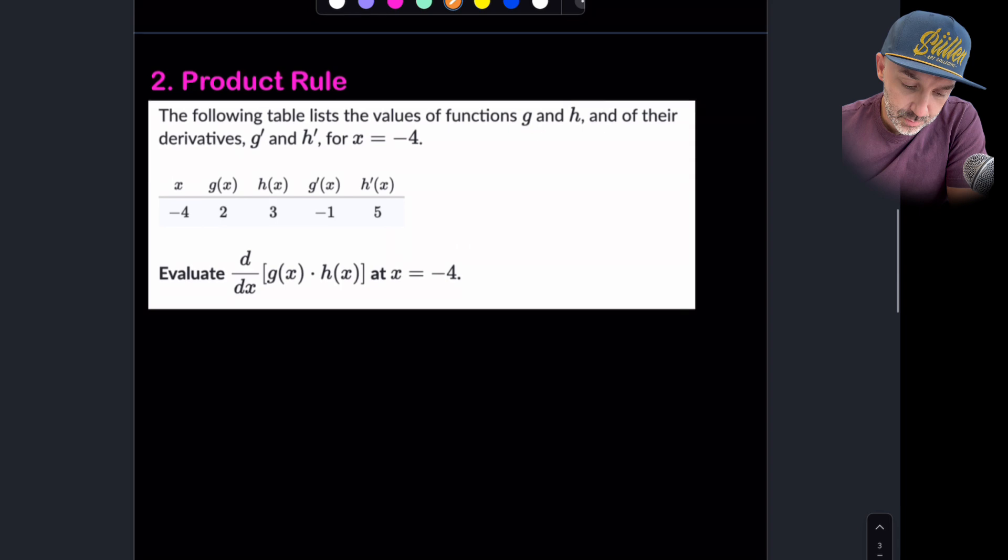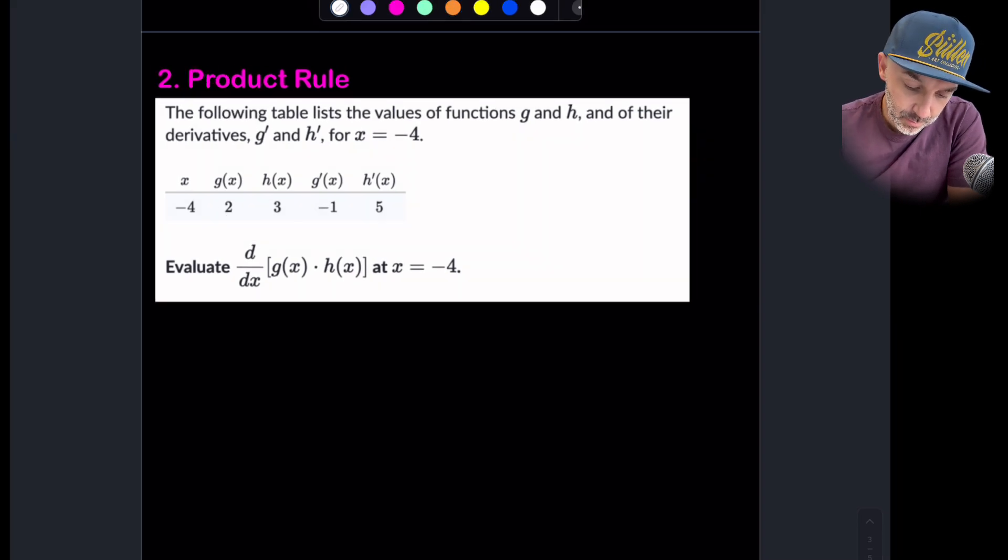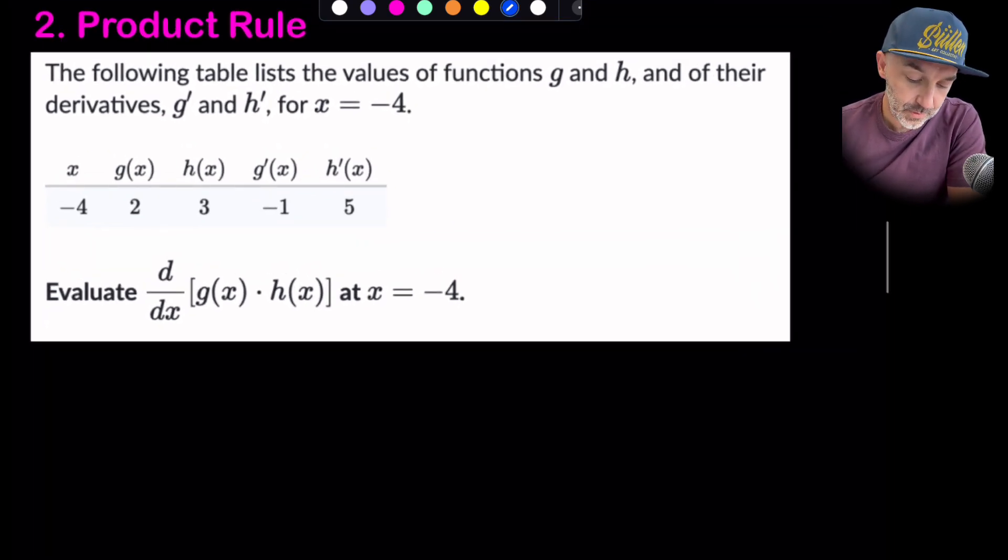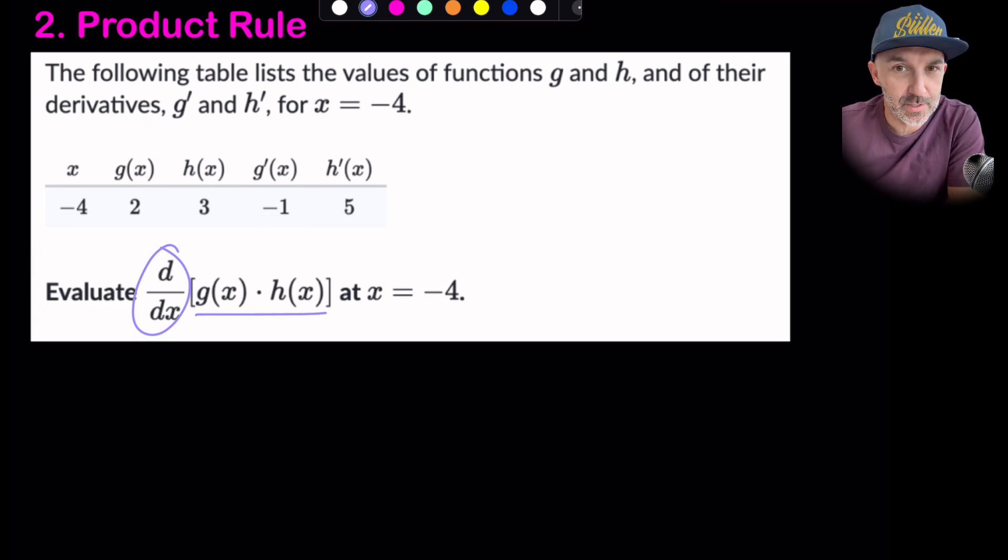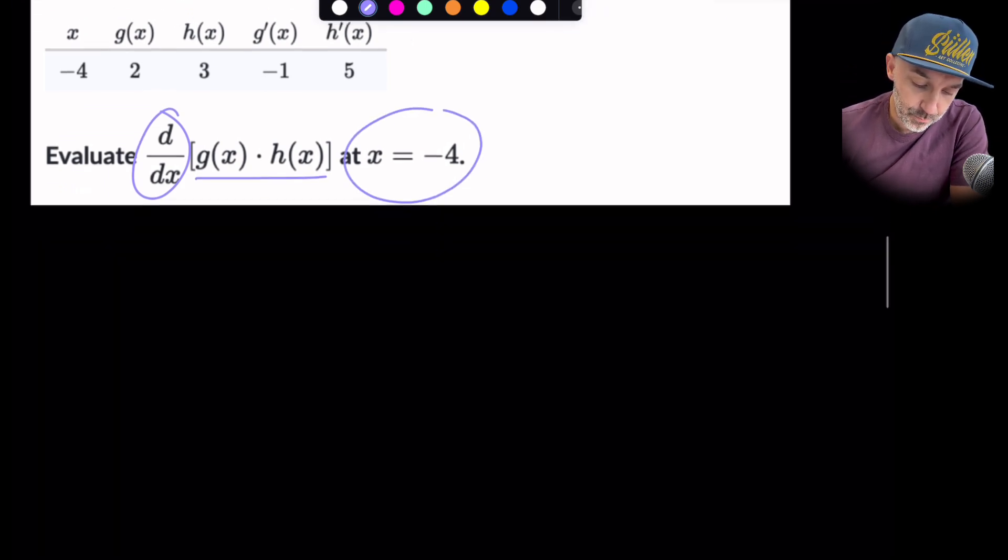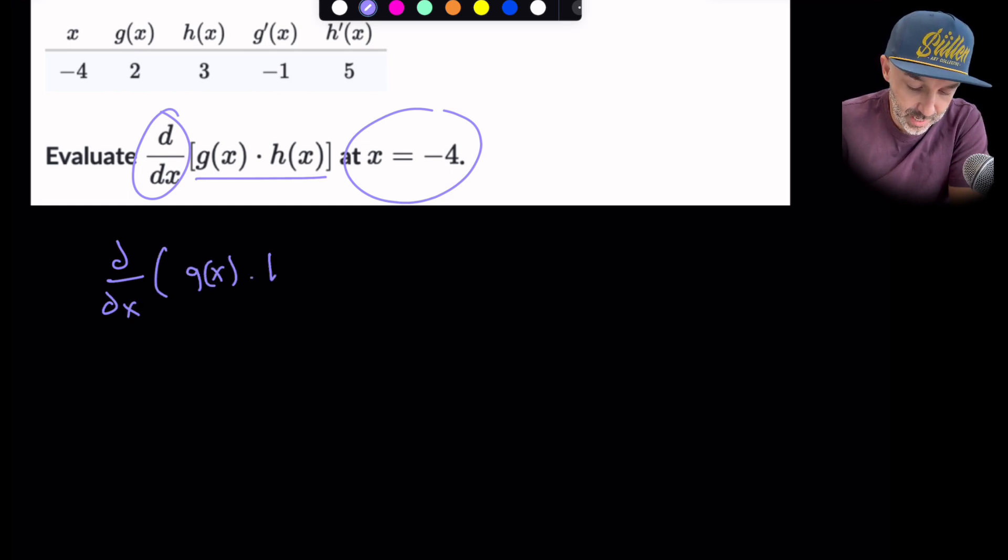Let's move on and have a look at the product rule. We're given a table again. They gave us g and h and the derivatives, but we don't actually know what those functions are. But they're asking us again here to find the derivative of g of x times h of x. So straight away, I know it's in the title that's product rule, but you'd need to recognize that it's the product of two functions. And they give us the point at minus 4.